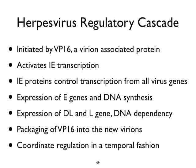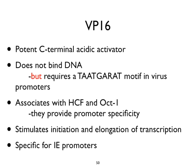The replication cycle is initiated by VP16. It activates immediate-early transcription. These proteins control transcription from all virus genes — if you destroy their activity, you stop transcription. Their expression leads to early gene synthesis and DNA synthesis, then expression of delayed-late and late genes, which are dependent on DNA replication. We package VP16 into the new virions and start the cycle all over again. This whole thing can be summarized as: there is coordinate regulation of virus gene expression in a temporal fashion. A follows B follows C. What is VP16? It's a protein with a potent C-terminal acidic activator. It does not bind DNA, but only works when the promoter contains the TATGARAT motif.